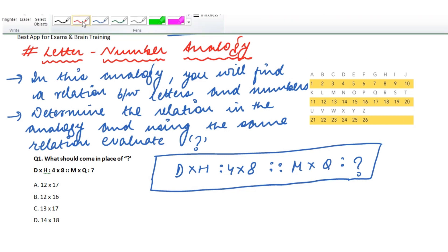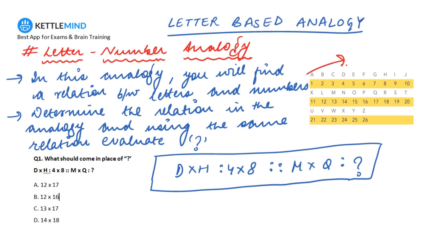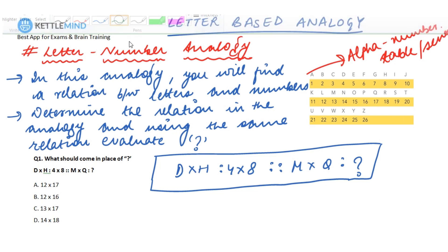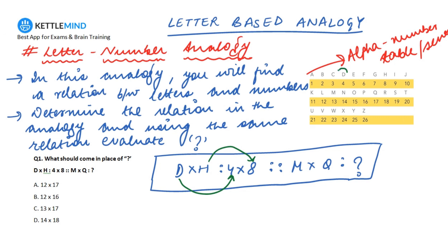One thing to start off with in letter-number analogies is the alphanumeric table. In the alphanumeric table every alphabet in the English language is marked with its corresponding number — A is 1, B is 2, and so on up to Z which is marked as 26, since we have 26 alphabets. In this given question, D is marked as 4 and H is marked as 8, which matches exactly with the alphanumeric series.